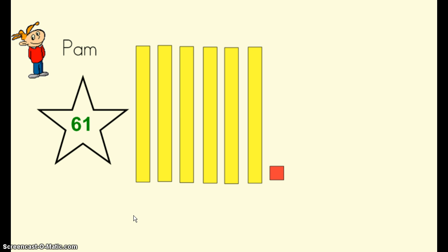Next I asked Pam to show me the number 61. Pam pulled out six tens and one one. Did Pam show the number 61 correctly? Yes she did. Pam knows that the number 61 is made up of six tens and one one. So when she made her picture for this number, she pulled out the correct amount of tens and ones.